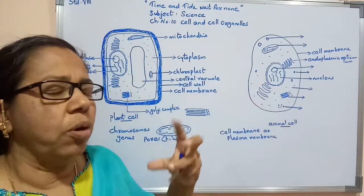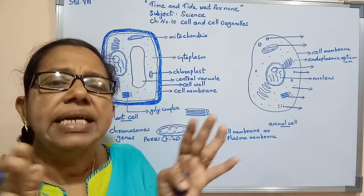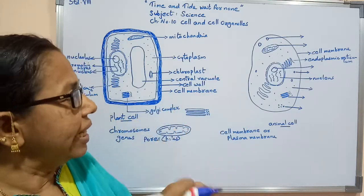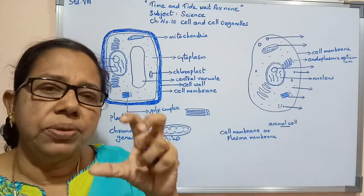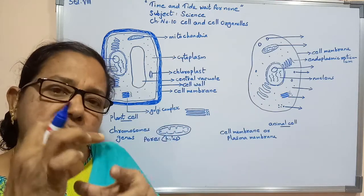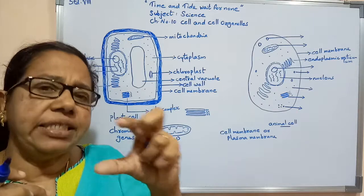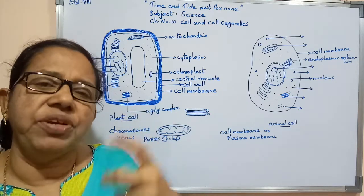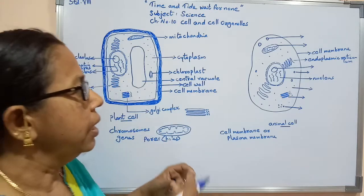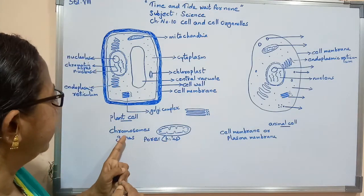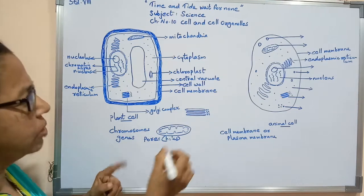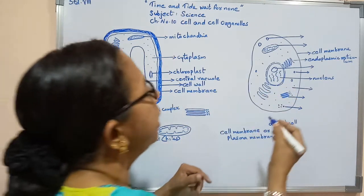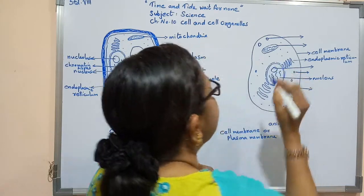During cell division, these chromatin fibers will condense — meaning they will become shorter — and form chromosomes. Inside the chromosomes, small segments will be there, and each segment has a particular function. Those small pieces are called genes.